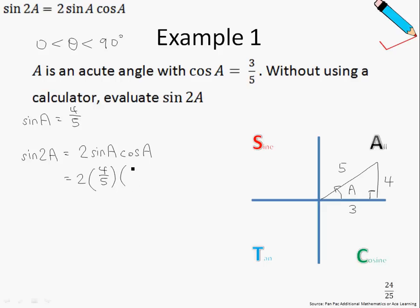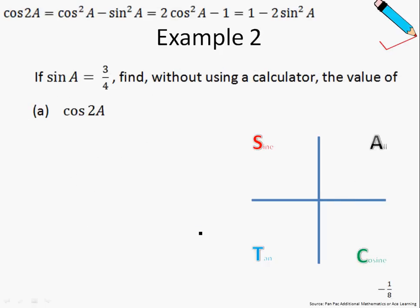Sine A we found earlier to be 4/5. Cosine A we found earlier to be 3/5. Simplifying this, we will just get 24 over 25. And that's it, we're done.